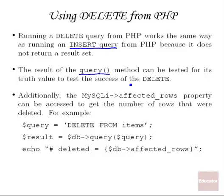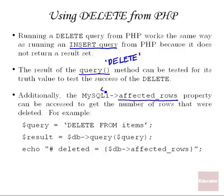Basically, all we can find out is whether the query was successful and how many rows were affected. The query method — when you pass it a DELETE statement — is a method that's part of our MySQLi object, assuming you've already opened a connection to the database. It's going to return true or false to let you know whether the DELETE query was successful. Additionally, the MySQLi class has the property affected_rows, which tells you the number of rows affected by the last operation. We can access this after running a DELETE statement to see how many rows were deleted.